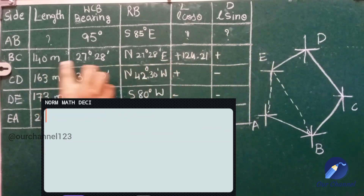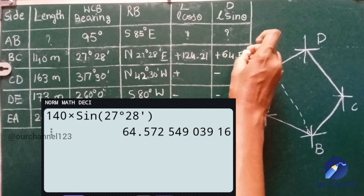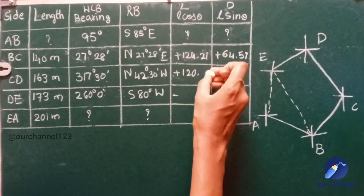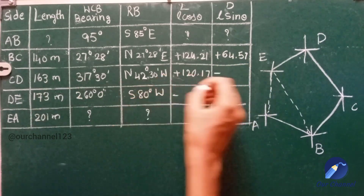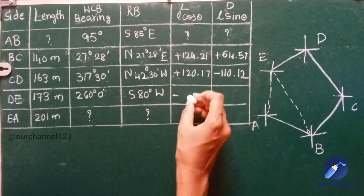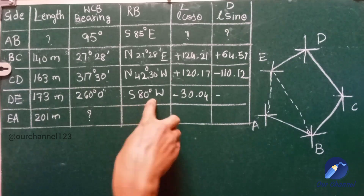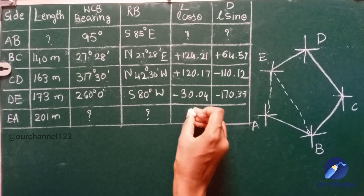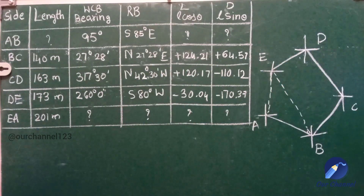140 × sin(27° 28') = 64.57. 163 × cos(42° 30') = 120.17. 163 × sin(42° 30') = 110.12. 173 × cos(80°) = 30.04. 173 × sin(80°) = 170.37. We don't know the EB values, so these are the latitudes and departures for the BCDE lines.